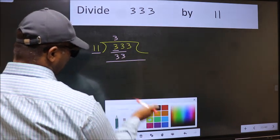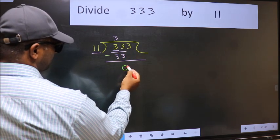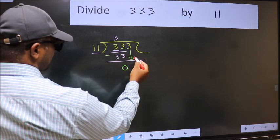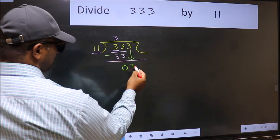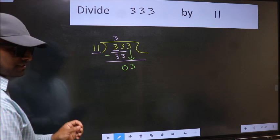Now subtract. 33 minus 33 is 0. After this, bring down the next number. So 3 down. After this step, the mistake happens.